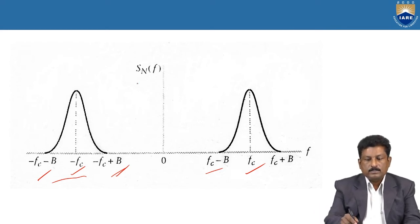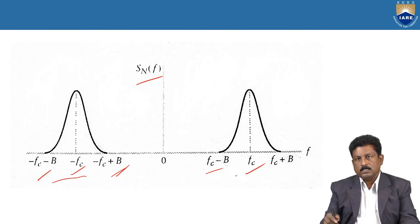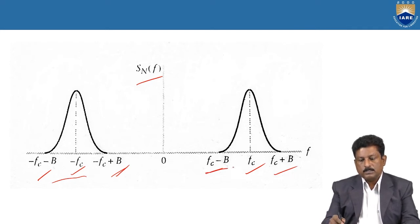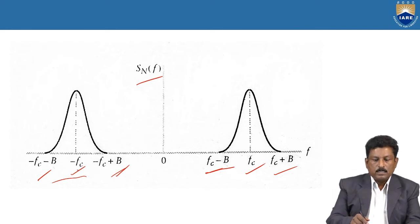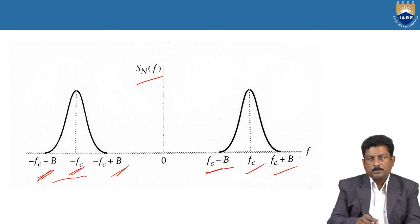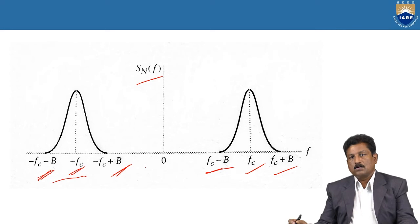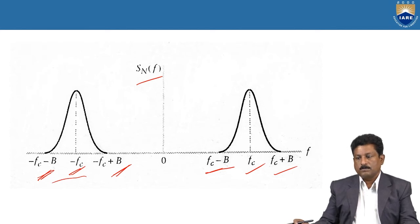S_n(f) represents the Narrowband Noise spectrum on both sides. On the positive side, fc plus B gives the upper sideband, and fc minus B is the lower sideband. On the negative side, minus fc minus B is the upper sideband, and minus fc plus B is the lower sideband. Depending on the addition of the signal component, it may be the upper sideband or the lower sideband.